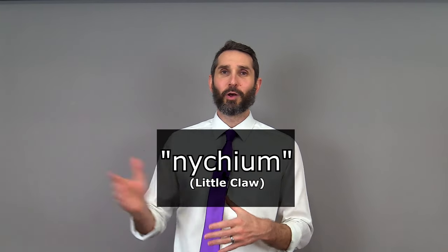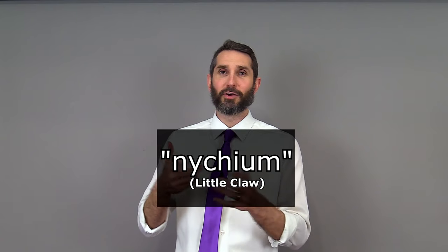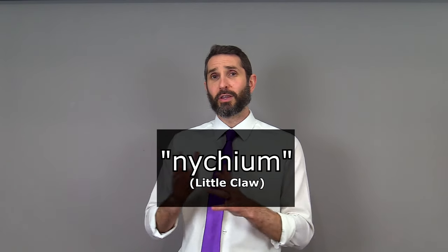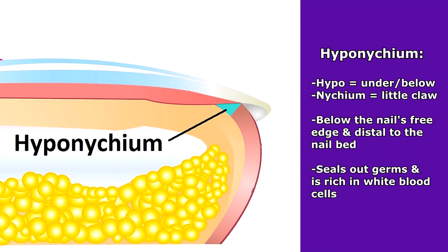Finally, there are different tissues that help form a seal between the nail and the surrounding folds. All of these tissues end in the word 'nychium,' which comes from an old word meaning 'little claw,' referring to your fingernail. The prefix tells you where each tissue is located. Hypo means 'under or below,' so the hyponychium is just under the free edge of the nail and distal to the nail bed. It is rich in white blood cells and forms a seal between the nail plate and the nail bed.